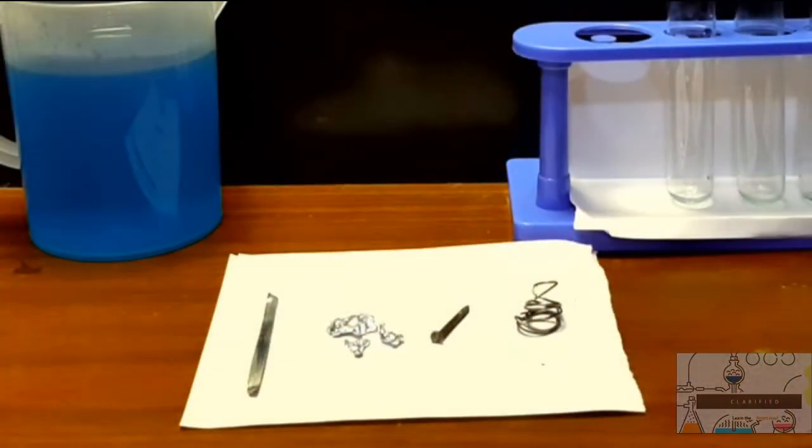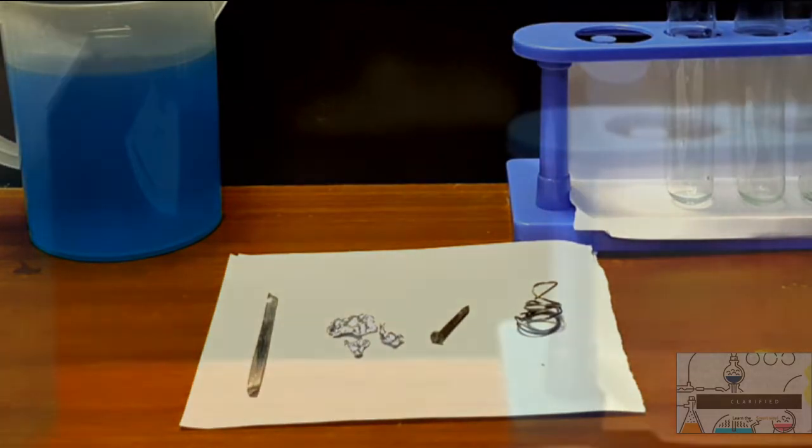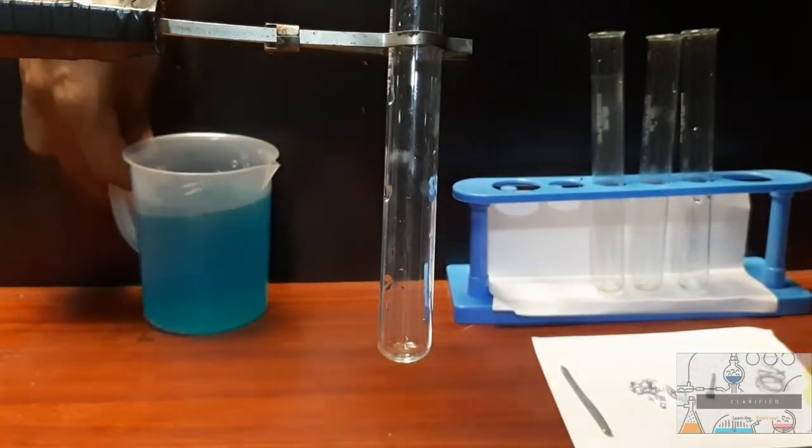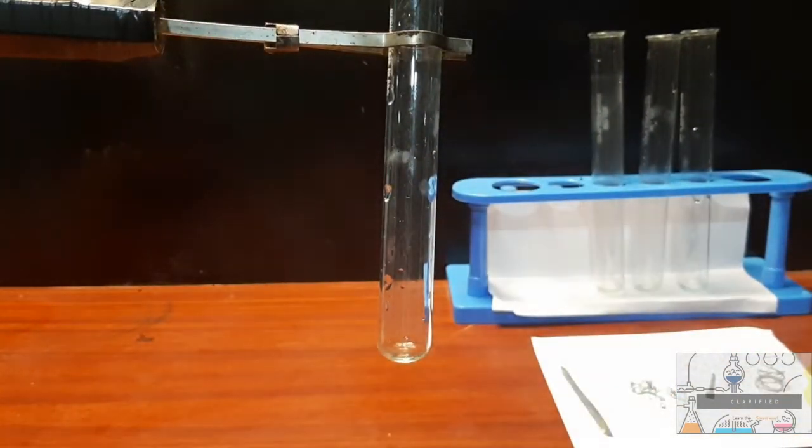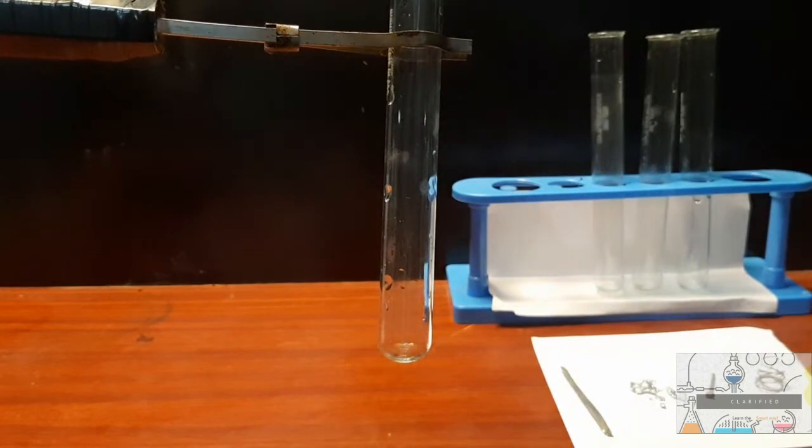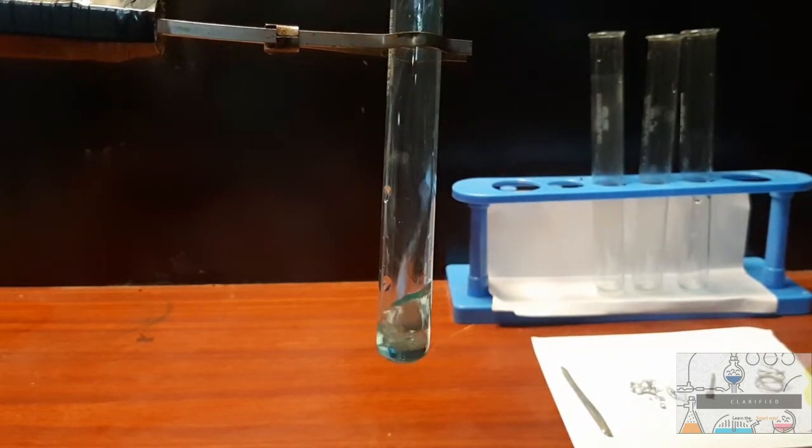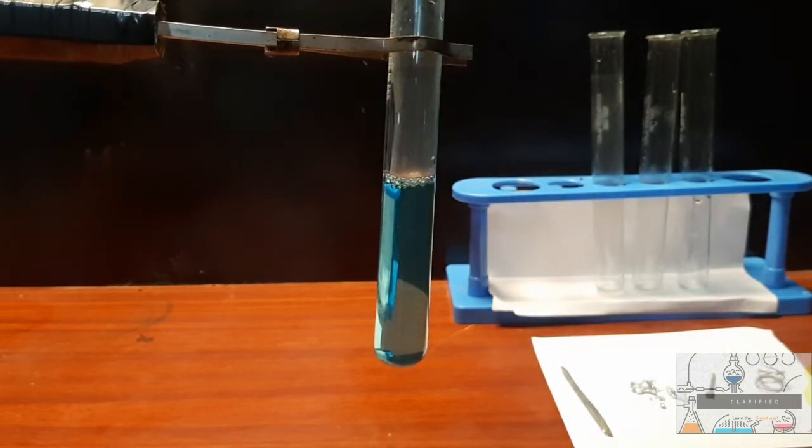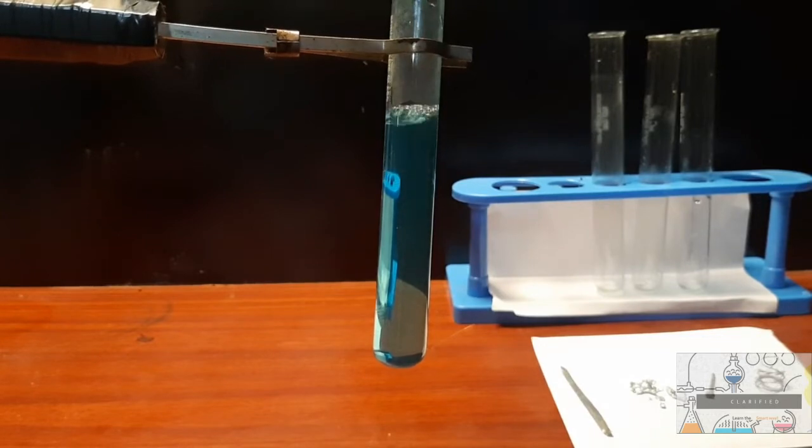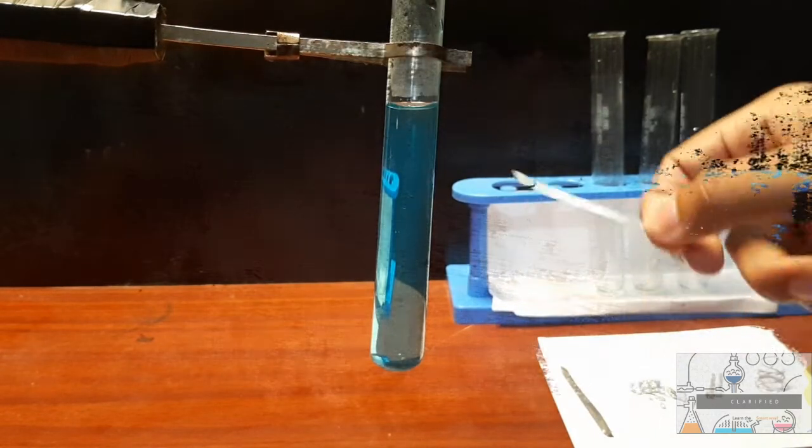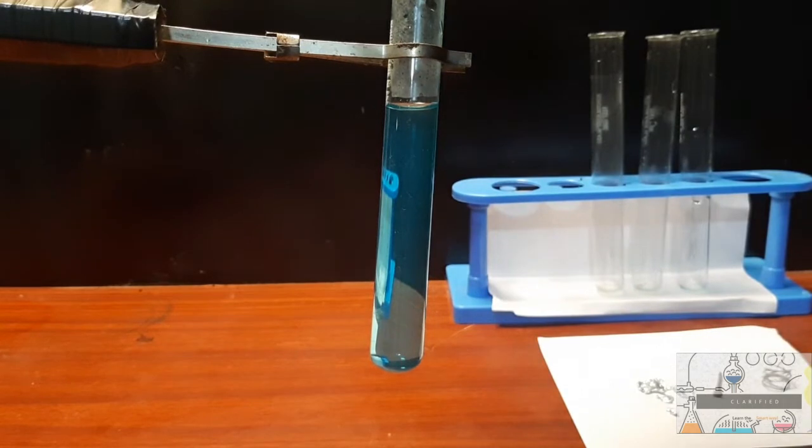Let's start by filling up this test tube with a pre-prepared copper sulfate solution which is blue in color. Now we'll be adding our first metal, a magnesium strip, into the test tube.